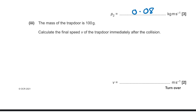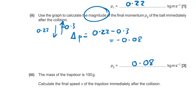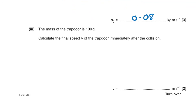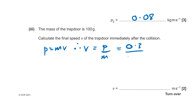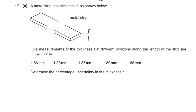The mass of the trapdoor is 100 g. Calculate the final speed of the trapdoor immediately after the collision. By conservation of momentum, the trapdoor gained 0.3 kg·m/s. Using v = p/m = 0.3 / 0.1 = 3 m/s.